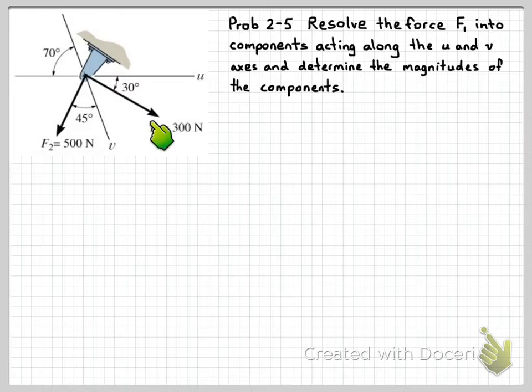In this particular problem, we're just going to look at the force F1, which is 300 newtons and acts at 30 degrees to this u-axis. We want to know the components of this force F1 along that u-axis and also along the v-axis.